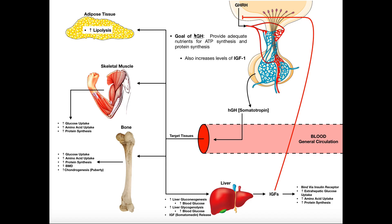Growth hormone is going to make changes around the body to increase the availability of those nutrients. The first two tissues we're going to look at are the liver and adipose tissue. Adipose tissue is your body fat, which contains lipids in the form of triglycerides. The first effect growth hormone has is on adipose tissue, where it stimulates lipolysis — a process that breaks down triglycerides into individual fatty acids, which are then released into the blood. Those fatty acids can be taken up by skeletal muscle or other metabolically active cells to make ATP.